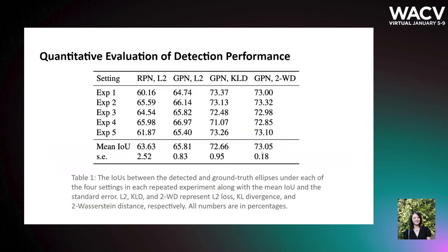This table shows the IoU between the detected and ground truth ellipses under each of the four experimental settings. Compared with the baseline model RPN plus R2 loss for ellipse regression, our proposed model GPN plus Wasserstein distance improves the mean IoU by around 10%.